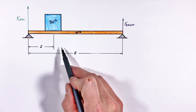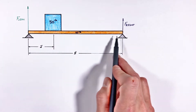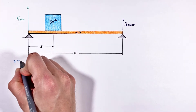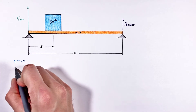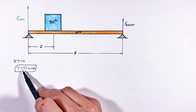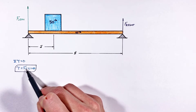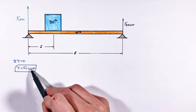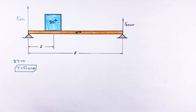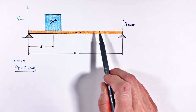We need to start from a fundamental truth of statics: the sum of all torques around any point on this beam must equal zero. Torque is given by the equation τ = Fr sinθ, where F is the force, r is the distance from a pivot point to the load, and sinθ is the angle between the force and the radius vector.